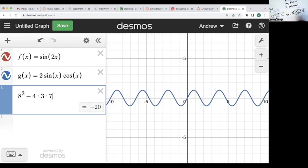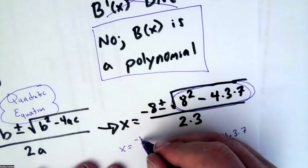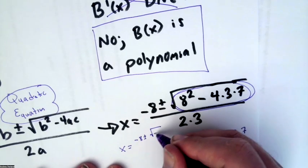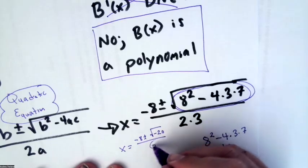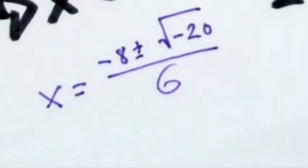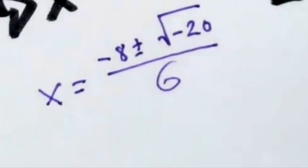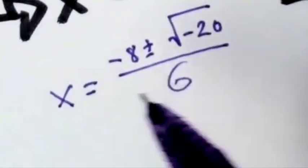So this would be x is equal to negative 8 plus or minus the square root of negative 20, all over 6. Now, can I take the square root of a negative number and have it be a real number? This would involve imaginary numbers. And we're not dealing with imaginary numbers right now.